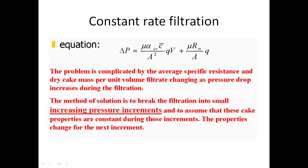When solving the problem, with compressibility we potentially have values of alpha and c that change with each increment. Rather than breaking the problem into time increments, we break it into increments of pressure. The method of solution is to break it up into increments of total pressure drop and then work out what time is needed for those pressure increments. The equation relates pressure drop over the filter medium and filter cake to the total pressure drop, and we work out the volume of filtrate and the time at which we've achieved that volume.